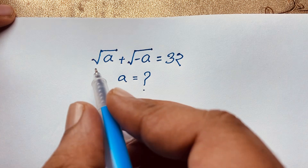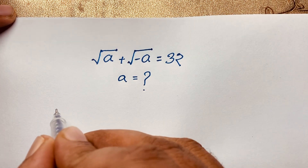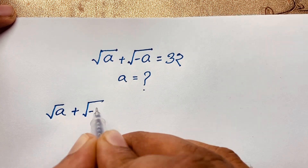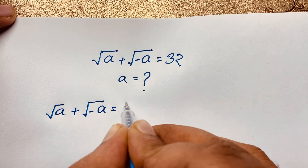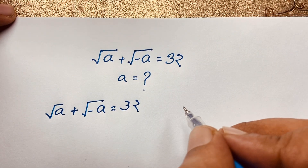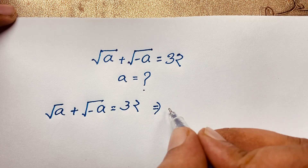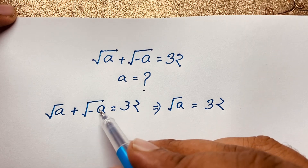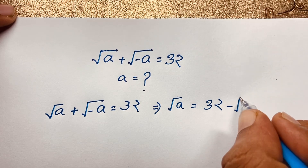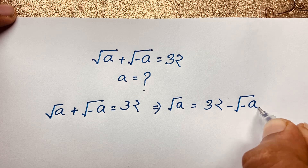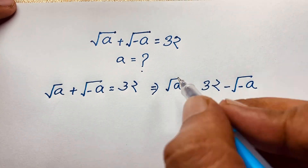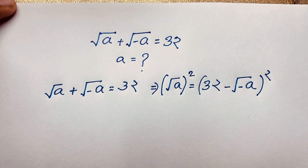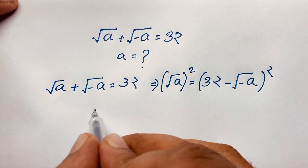So first of all, I can see that square root A plus square root minus A is equal to 32. This is our question. Now I move square root negative A to the other side, so it will be square root A equals 32 minus negative square root minus A. I use both sides whole square, and the square root is cancelled, so we will find out it will be A.